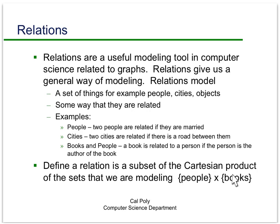A more formal definition: a relation is a subset of the Cartesian product of the sets we're dealing with. In the books and people example, we'd look at the Cartesian product of all people across all books — that's all the ordered pairs of people and books — and the relation would be the subset of that set consisting of the ordered pairs where the first entry is a person and the second entry is a book they authored.